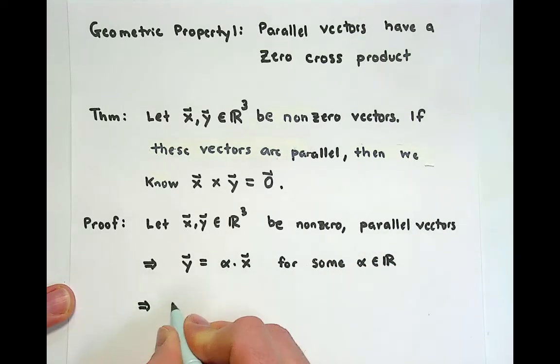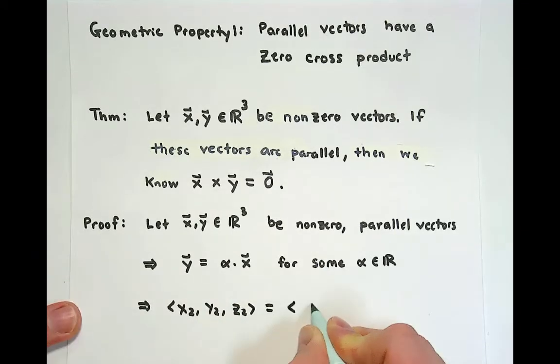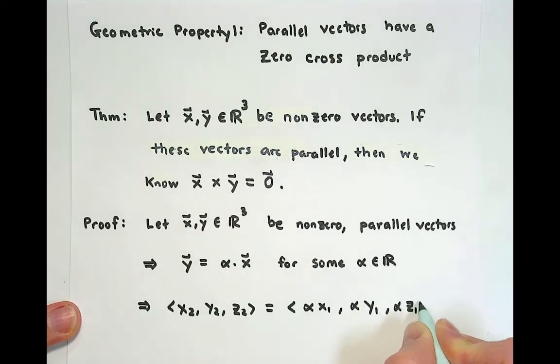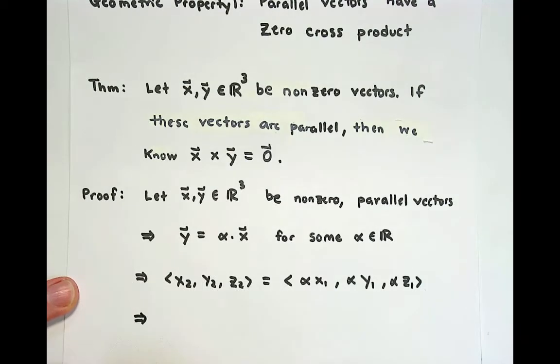This means that if I look at this as x₂, y₂, z₂, that indeed this is going to be alpha x₁, alpha y₁, alpha z₁, by the definition of scalar multiplication.